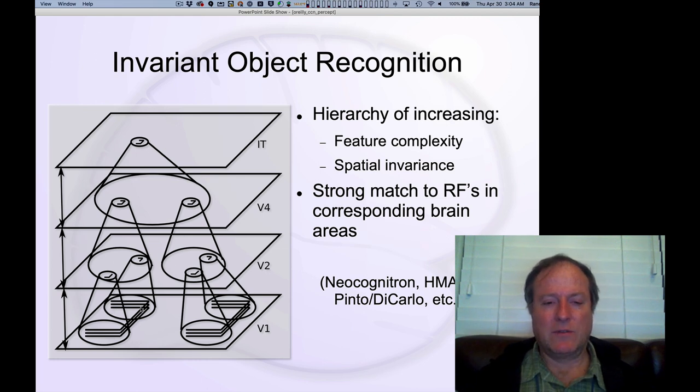This diagram shows you how as you go from V1 to V2, the neurons in V2 have greater featural complexity by recognizing combinations, these intersections, junctions of oriented edge features that are represented in V1.